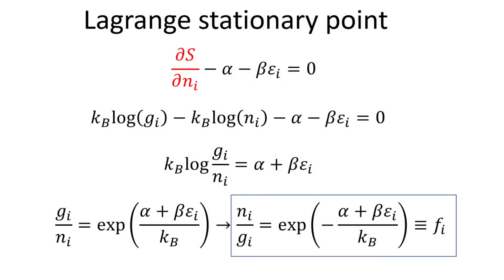Returning back to the Lagrange stationary point, we can now substitute the entropy stationary point into the expression. The terms involving logarithms can be combined, and with some algebra, we can arrive at an expression for the particle occupation for energy level i, which is the ratio between the number of particles N sub i to the total available states g sub i at that energy level. This occupation factor is the classical Maxwell-Boltzmann distribution function we are after, and what is left is only to determine the Lagrange multiplier constants alpha and beta.